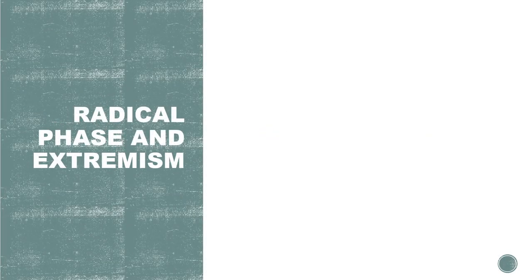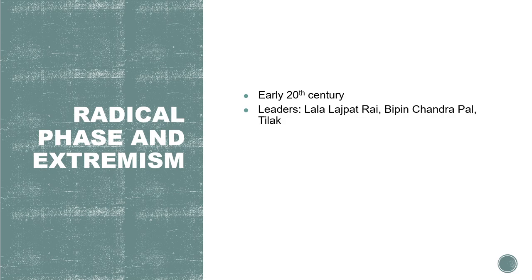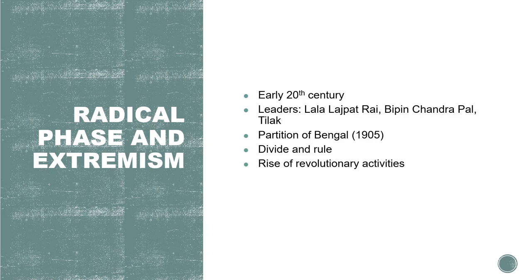The early 20th century saw the emergence of radical nationalism. Leaders like Lala Lajpat Rai, Bipin Chandra Pal, and Bal Gangadhar Tilak advocated for more assertive forms of resistance against British rule. This period is marked by the adoption of radical measures and the rise of revolutionary activities. One of the significant events during this phase was the partition of Bengal in 1905, which was seen as an attempt by the British to divide and rule by creating religious divisions. The radical leaders led strong agitation against this move, which eventually led to the reversal of the partition in 1911.